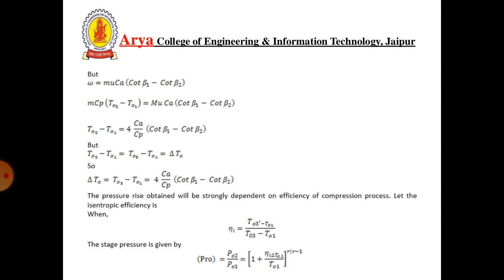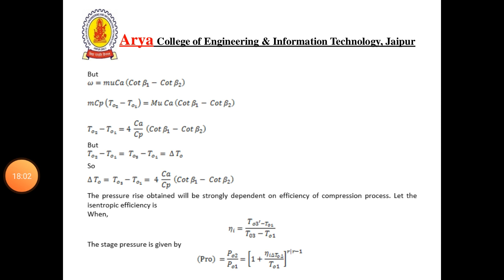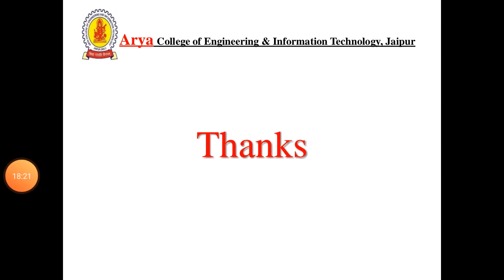The pressure rise is strongly dependent on the efficiency of the compression process. With isentropic efficiency η_i, the stage pressure ratio is: P02/P01 = [1 + η·ΔT0/T01]^(γ/(γ−1)). To obtain a high temperature rise per stage — which minimizes the number of stages for a given overall pressure ratio — the design must combine high blade speed, high axial velocity, and high fluid deflection (β1 − β2) in the rotor blades.